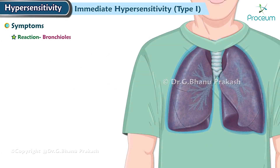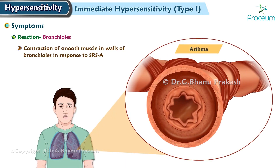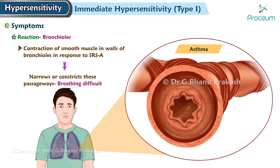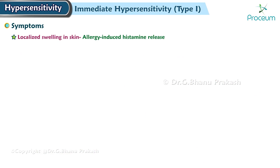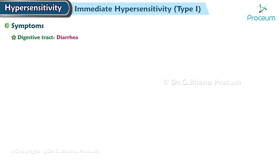If the reaction is concentrated primarily within the bronchioles, which are the small respiratory airways that lead to the tiny air sacs within the lungs, asthma results. Contraction of the smooth muscle in the walls of the bronchioles in response to SRSA narrows or constricts these passageways, making breathing difficult. Localized swelling in the skin because of allergy-induced histamine release causes hives. An allergic reaction in the digestive tract in response to an ingested allergen can lead to diarrhea.